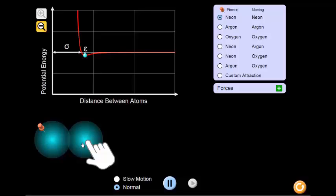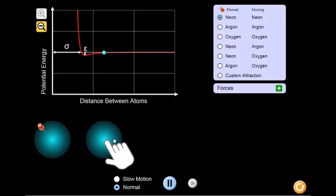We can move the atoms so that they are farther apart from each other. Let's see what happens when we move the atoms apart and then allow them to move freely.